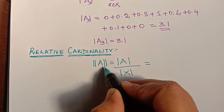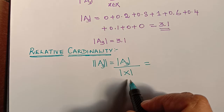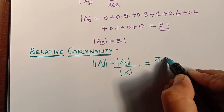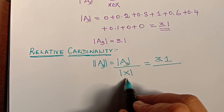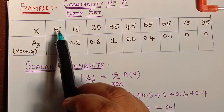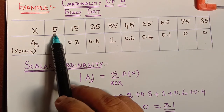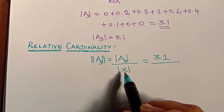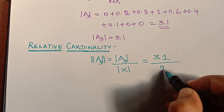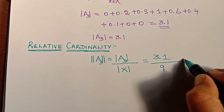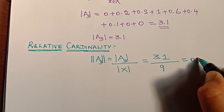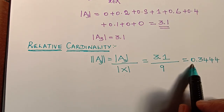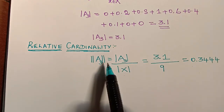Let us find the relative cardinality for the same example with set A3. The relative cardinality equals the scalar cardinality divided by the cardinality of the universal set. The scalar cardinality of A3 is 3.1. The universal set has 9 elements, so modulus of X equals 9. Therefore, the relative cardinality is 3.1 divided by 9, which equals approximately 0.3444.